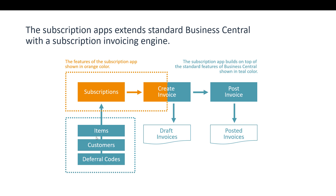We're using your current items — you can of course create new ones specifically for your subscriptions. We're using the customers you already have, and if you create a new customer that will be available to add on new subscriptions. We also use the standard deferral codes so you can defer your income, but all of these three data sources are standard Business Central.